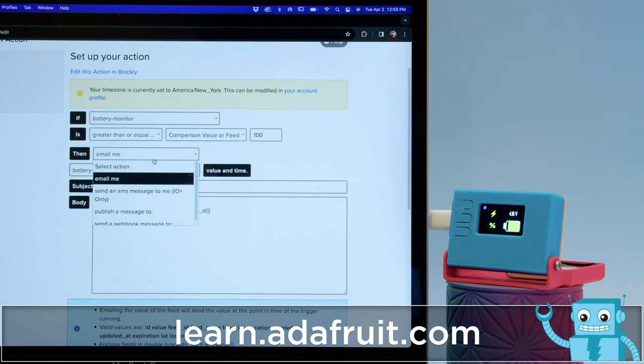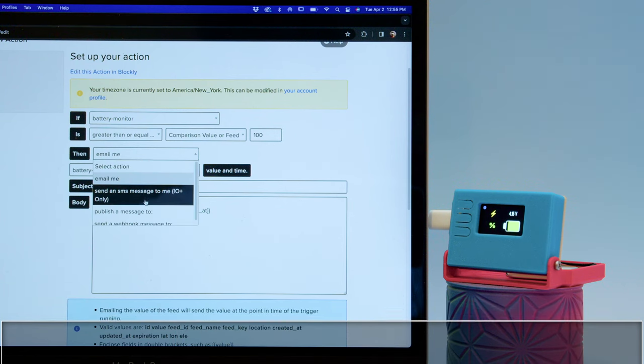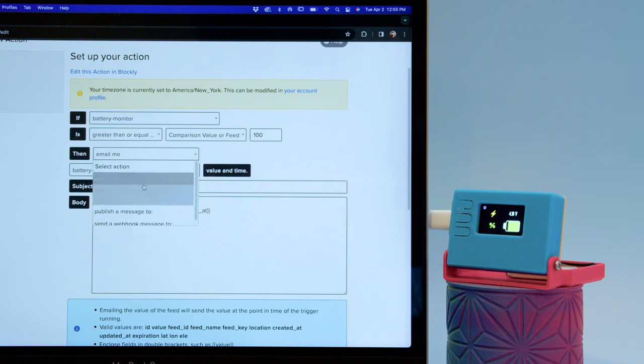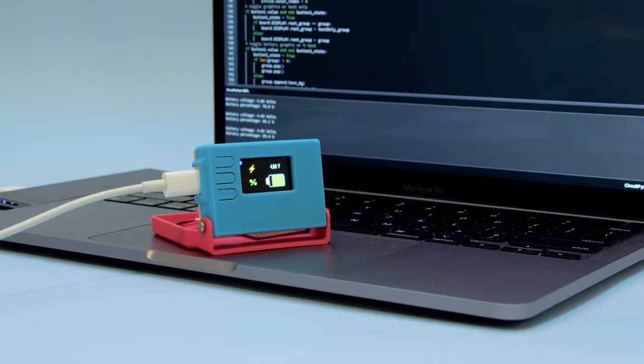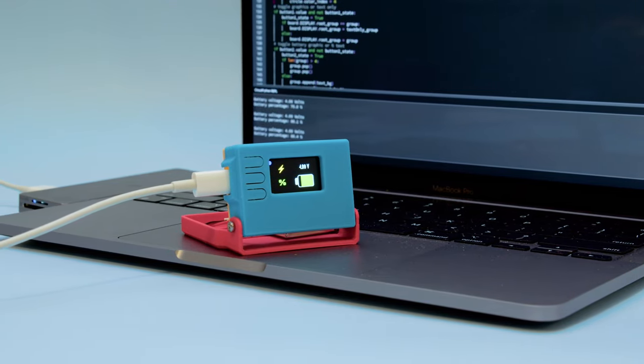You can set up an Adafruit action to receive a custom email when the battery is fully charged or if it's nearly empty. You can also use this as a handy tool for folks who have multiple lipo batteries and want to quickly check how full or empty they are.